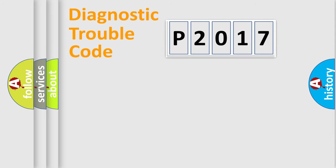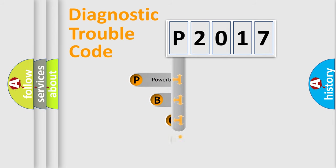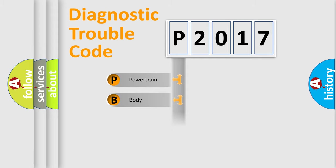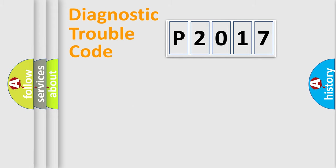Let's look at the history of diagnostic fault code composition according to the OBD2 protocol, which is unified for all automakers since 2000. We divide the electric system of the automobile into four basic units: Powertrain, Body, Chassis, and Network. This distribution is defined in the first character of the code.